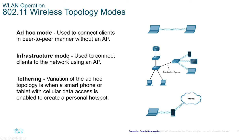Infrastructure mode, the most common type used today, connects clients to a network using an access point. Your home router-modem-switch with wireless capabilities uses infrastructure mode. It is used by small businesses, large campuses, and at home for connecting clients through APs.